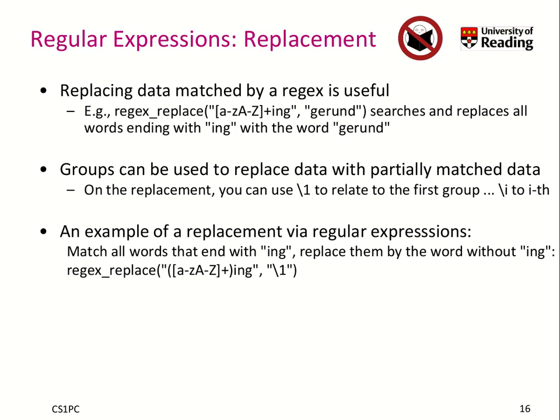Sometimes you want to replace text that you match with a part of the match pattern itself. You can refer to previously captured groups using backslash 1 for the first group, backslash i for the ith group. For example, using the same brackets now indicating a group on the left-hand side, we replace this group followed by 'ing' with backslash 1 — the content of the group. Basically it strips all the 'ing' suffixes from any word that ends with 'ing'.